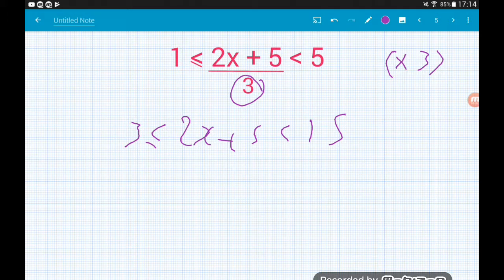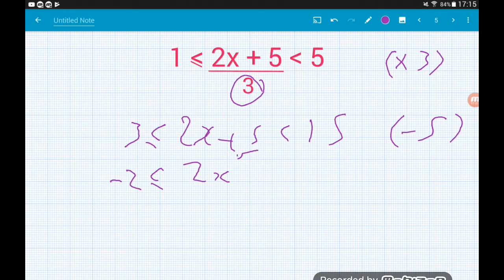Now we need to start getting x on its own. So if we've got 2x add 5, our first move is to get rid of the 5. And we do that by taking him away. So 3 minus 5 is minus 2. So we get minus 2 is less than or equal to 2x, which is strictly less than 15 minus 5, which is 10.